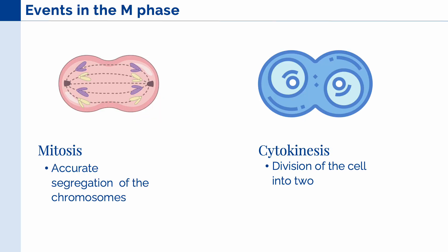Let's first discuss the two events that occur in the M phase. First, we have mitosis, which involves the accurate segregation of your chromosomes. This is the process in which the nucleus gathers up and organizes its chromosomes and divides into two. Next, we have the actual cell division, which we call cytokinesis. In this stage, not just the chromosomes divide, but the entirety of the cell, which also includes its different organelles and its cell membrane.